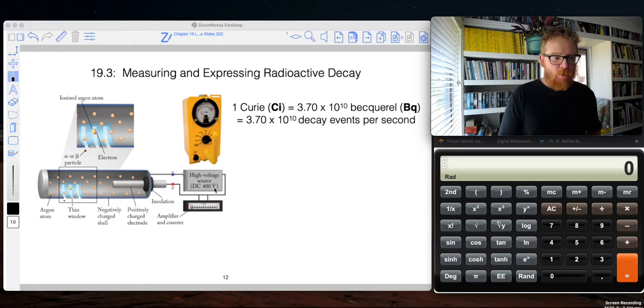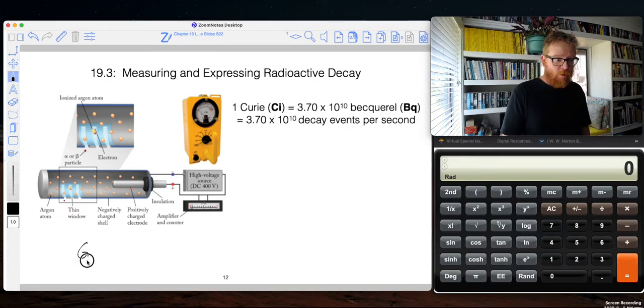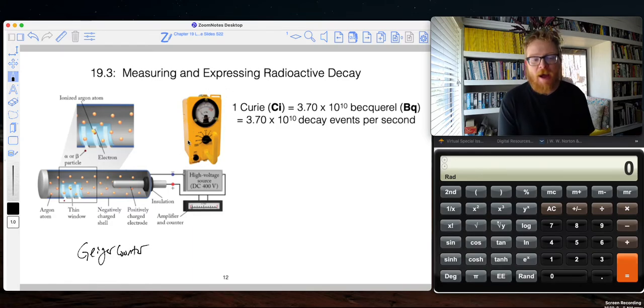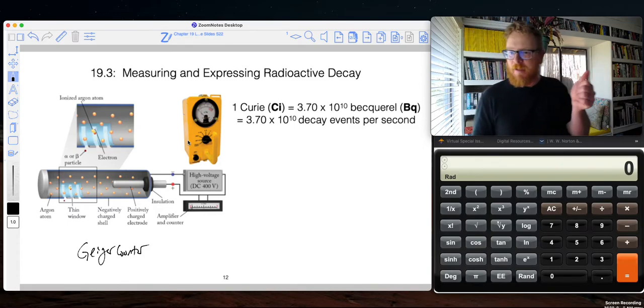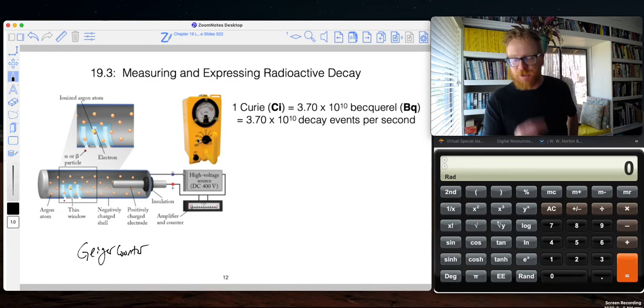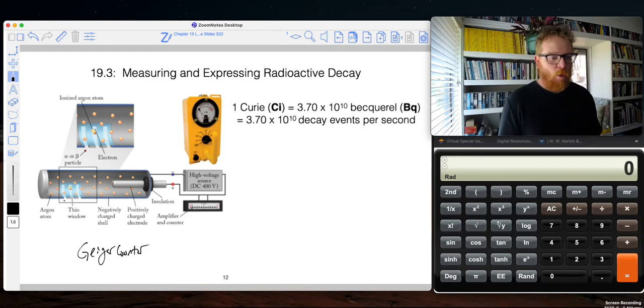Here we can see an image of a device that you've likely all heard of before known as a Geiger counter. This yellow looking box right here, you've probably heard these things. They make that obnoxious clicking, beeping sound. I'm going to bring one of these into our live lecture so we can get a feel for how they work.